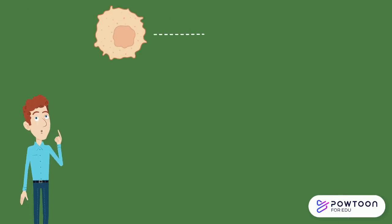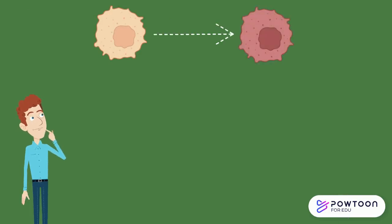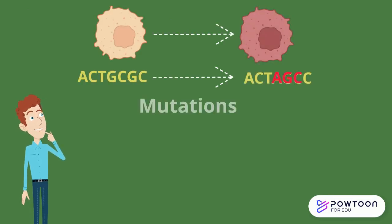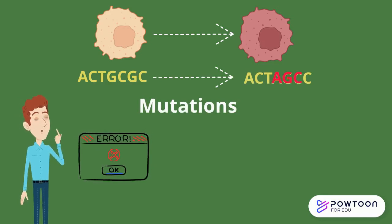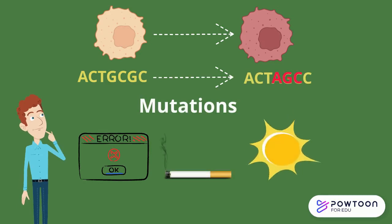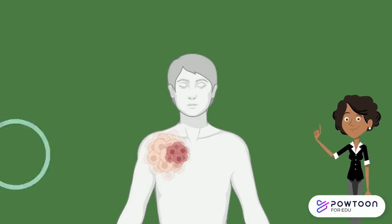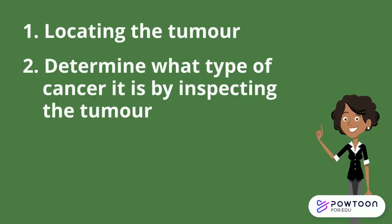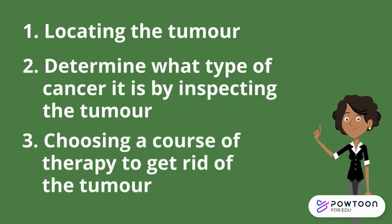But how do cells get damaged in the first place? Changes in the DNA called mutations can result in damaged cells. This may be a result of errors during the DNA replication process of cell division, or it may be triggered by harmful substances such as the chemicals in tobacco or UV rays from the sun. Cancer treatment involves locating the tumor, determining what type of cancer it is, and then choosing a course of therapy to get rid of the tumor.